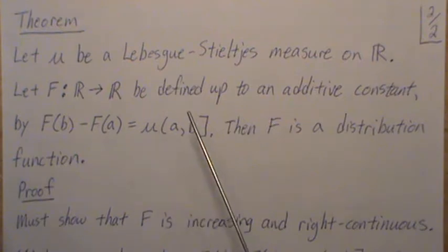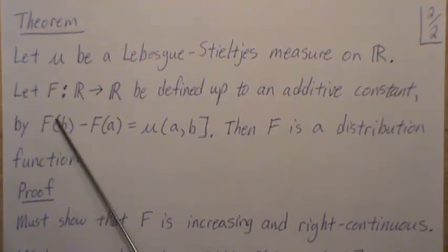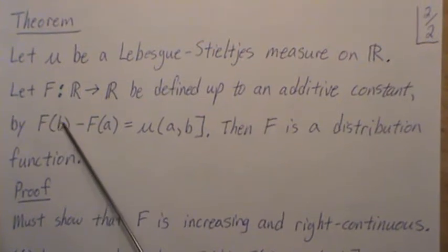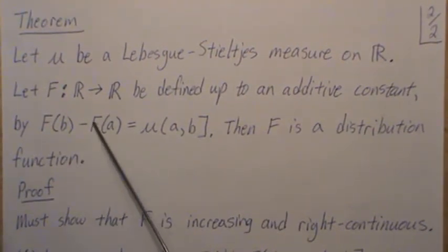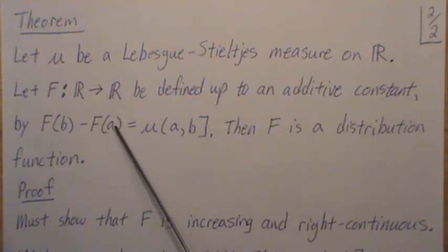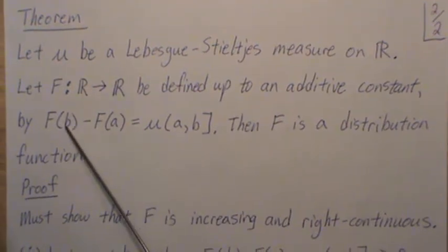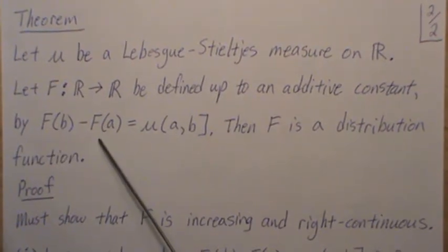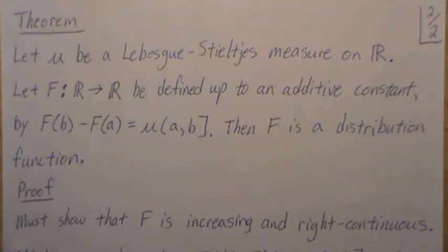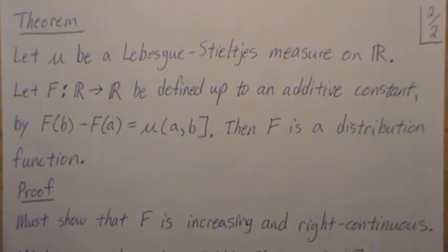What does it mean to be defined up to an additive constant? If in this function F(b), it's really plus 10, but since this side is also F(a) plus 10, the plus 10's cancel when you do this subtraction. So that additive constant, whatever it may be, cancels out, so we know the function up to that additive constant.